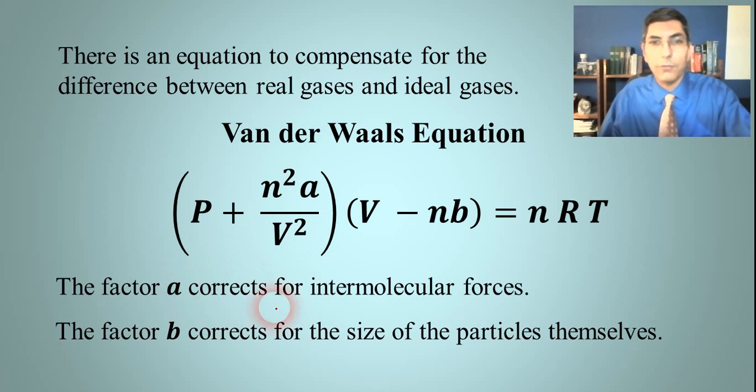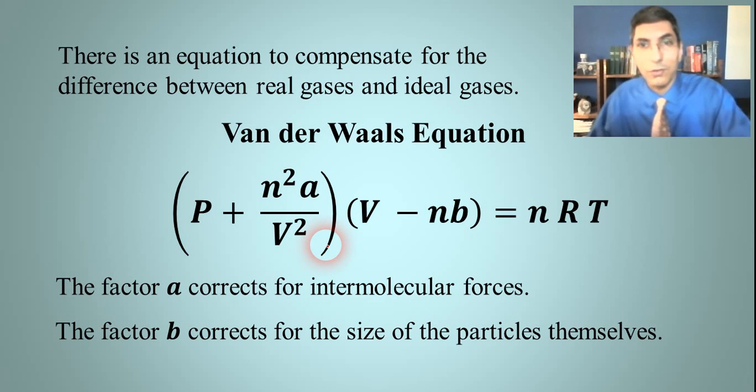We have these other little variables A and B in here. The A corrects for the intermolecular forces between the gas molecules. And the B corrects for the actual size, the volume of those gas particles themselves. And so once you plug these in here, you can actually compensate for the difference and find out what the real volume or the real pressure is going to be with the Van der Waals equation.